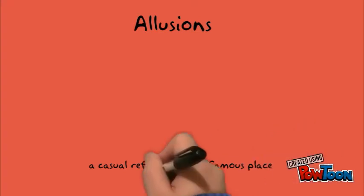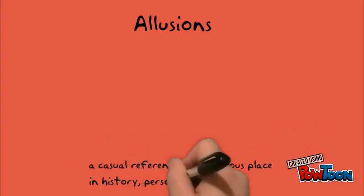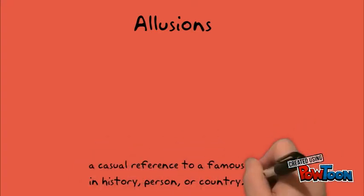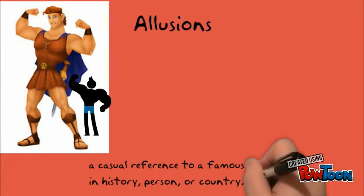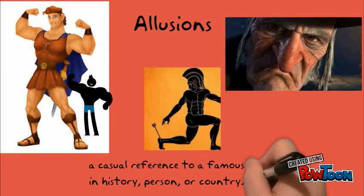Next are allusions. An allusion is a casual reference to a famous place in history, person, or culture. Some examples are: he's a real Hercules, there are chillies here, or he's such a Scrooge.